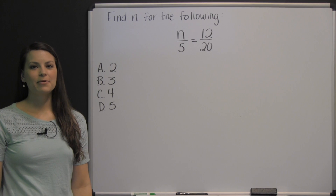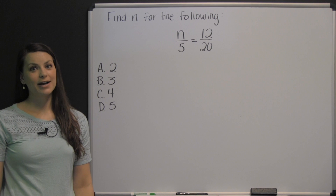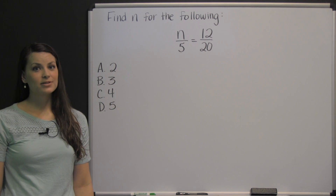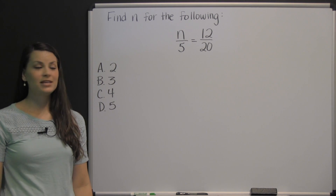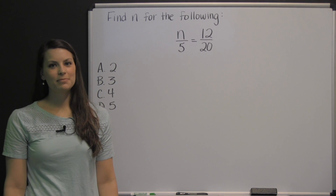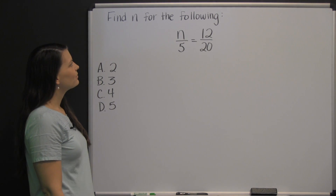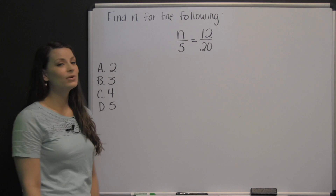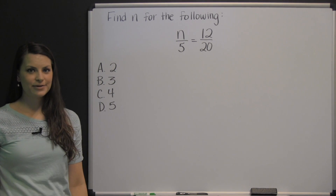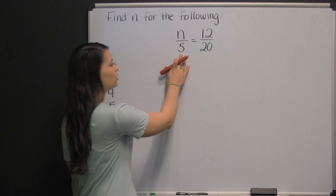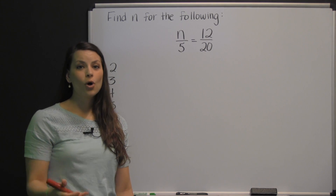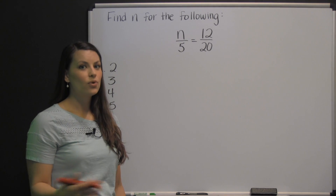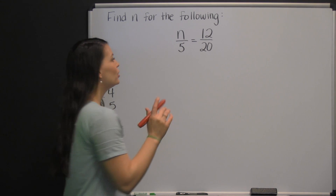This is a question from the mathematics computation portion of the TABE practice test. On this section, you will not be given a calculator, so make sure you're prepared to answer these types of questions using just a pencil and paper. Let's look at it: find N for the following — N divided by five is equal to twelve-twentieths. This is a proportion — a ratio set equal to another ratio. One way that always works is using cross products, or cross multiplication.